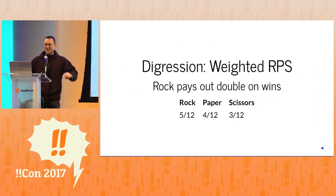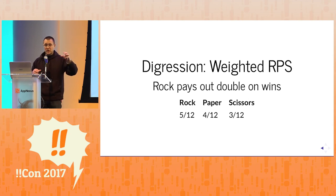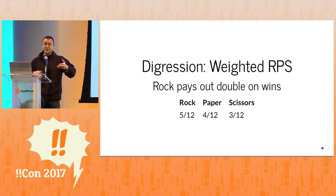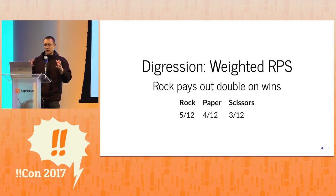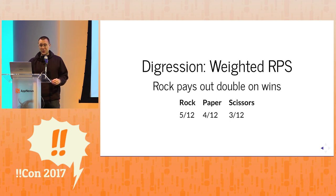Imagine rock, paper, scissors but rock pays out double when you win — instead of two points it pays three. You end up in a funny situation where you want to play rock most of the time, but not all the time, because if you play it all the time I'll just play paper all the time. It turns out — and this is one of the things I used to test my AI — you want to play rock five-twelfths of the time. So whenever anyone offers to play this game with you for money, now you know what to do.